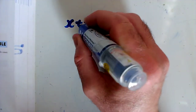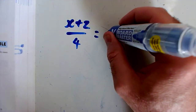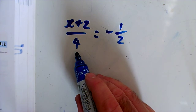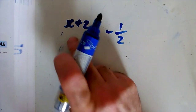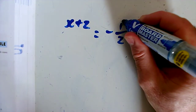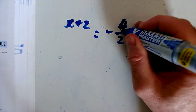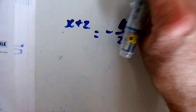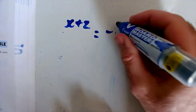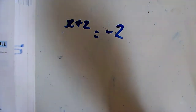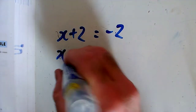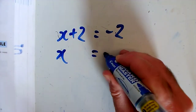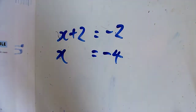Question M: x plus 2 over 4 equals minus 1 half. I'd like to get rid of the division by 4, so I multiply by 4. On the right side, minus 1 half times 4 gives minus 4 over 2, which is minus 2. So x plus 2 equals minus 2. Taking away 2 from both sides, x equals minus 4.